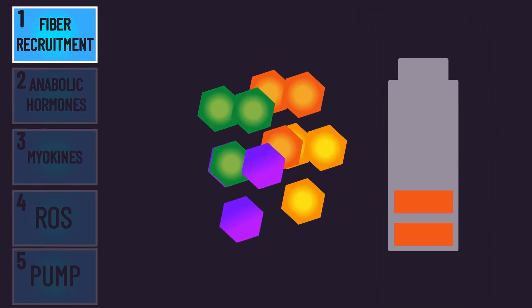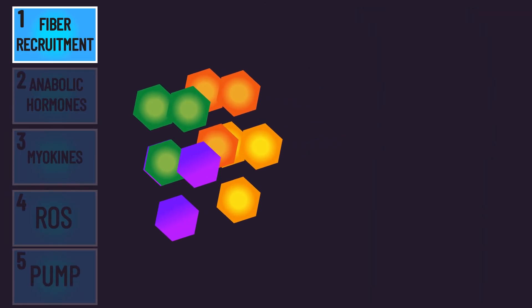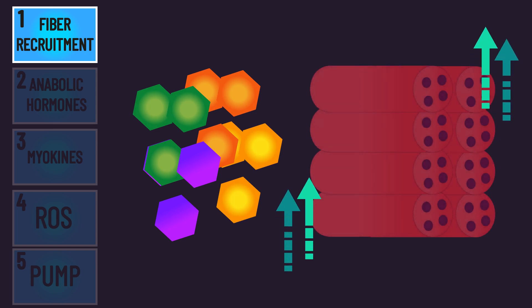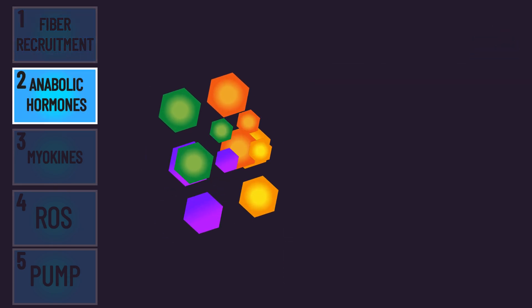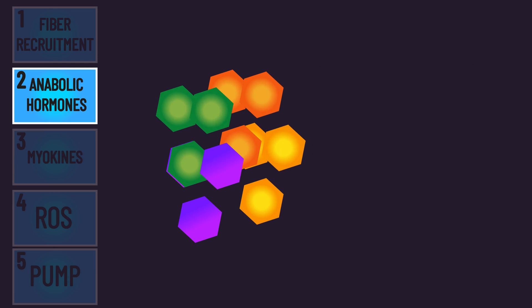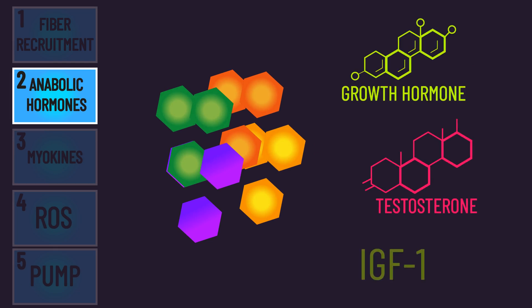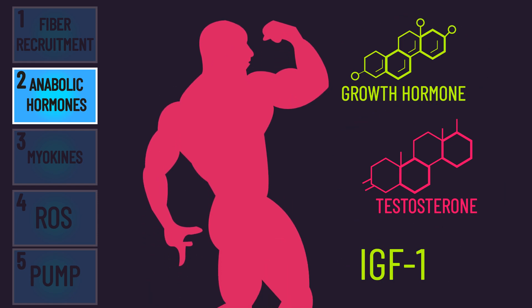The first is that metabolic stress and fatigue directly necessitates more muscle fibers getting recruited and therefore exposed to tension. The second is that training producing high metabolic stress is associated with temporary elevations in anabolic hormones like growth hormone, IGF-1, and testosterone, and this might promote hypertrophy.